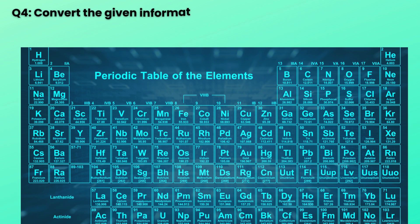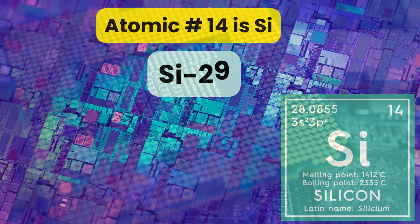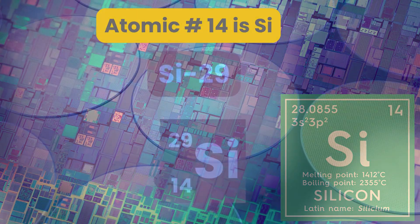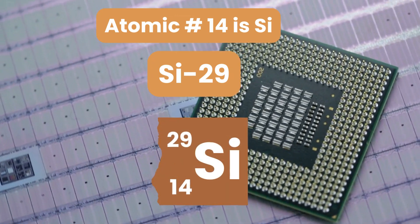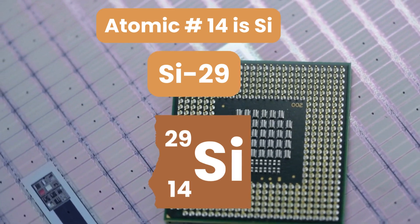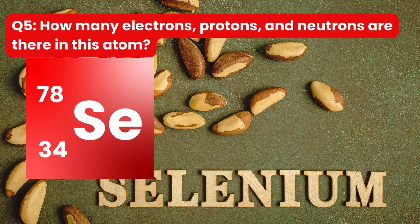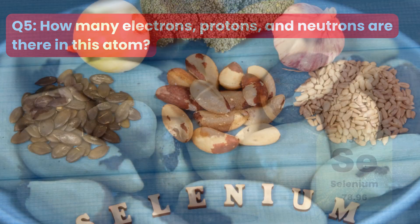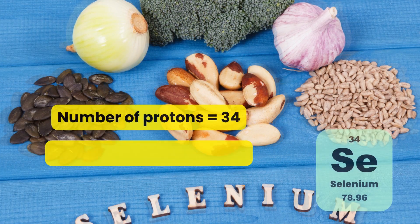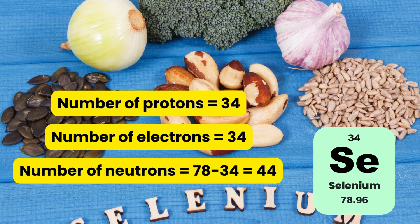Question 4: Convert the given information into hyphen notation and condensed notation for an atom with atomic number 14 and mass number 29. Atomic number 14 is silicon, so the hyphen notation is Si-29, and the condensed notation has left superscript 29, left subscript 14, with the right superscript blank since net charge is zero. Question 5: How many electrons, protons and neutrons are in the atom selenium with left subscript 34 and left superscript 78? Number of protons equals 34. Number of electrons is also 34 since net charge is zero. Number of neutrons equals mass number 78 minus atomic number 34, which equals 44.